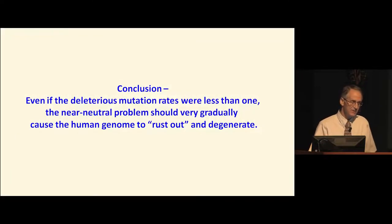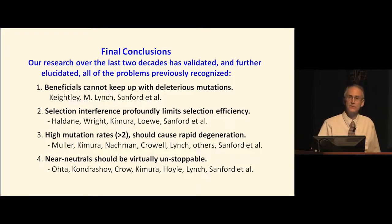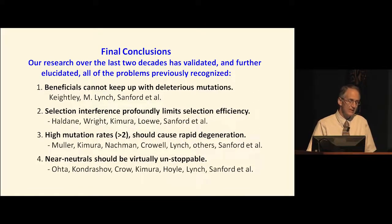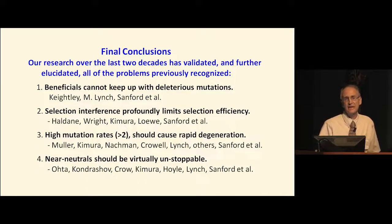Final conclusions: our research over the last almost two decades has validated and further elucidated all the problems already well-known within population genetics. To summarize the four points: beneficial mutations cannot keep up with deleterious mutations; selection interference profoundly limits selection efficiency; high mutation rates above 2 should cause rapid degeneration; and near-neutral mutations are virtually unstoppable. That is the summation of 18 years of research, and it is consistent with the history of population genetics starting from the founders of Neo-Darwinian theory. All the population geneticists who have carefully examined it have been troubled.